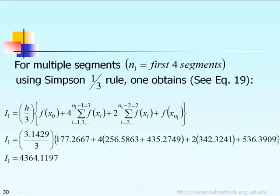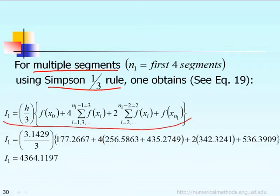Now we apply the so-called multiple segment Simpson one-third rule based on the formula we developed earlier. This is the equation to calculate the multiple segment Simpson one-third rule. Notice the value of n1 is equal to 4, because you have 4 segments for Simpson one-third rule. Because of that, the subscript i for this summation will go from one to three, and for the next summation the subscript i will go from two to two.